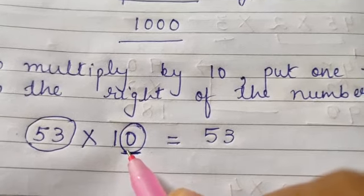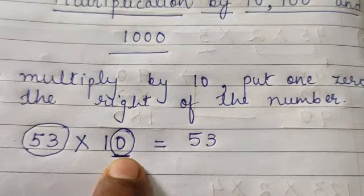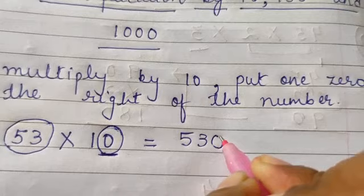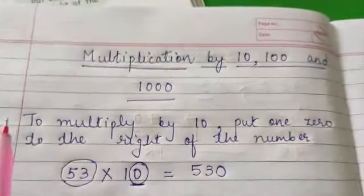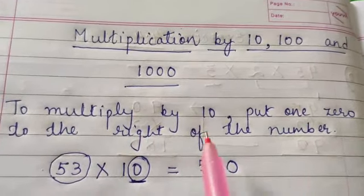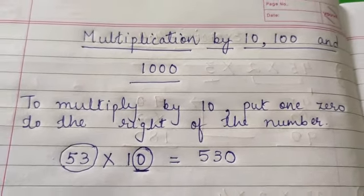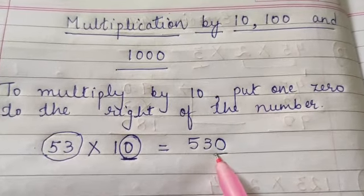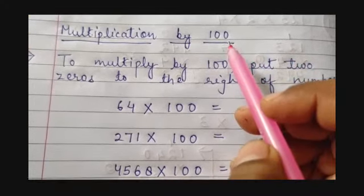53, and the number of zeros in the multiplier — here you can clearly see that there is 1 zero in the multiplier, that is 10 — so we will be writing 1 zero in the product. It is given in your book: to multiply by 10, put 1 zero to the right of the number. That is the shortest method to multiply any number by 10. You just need to put 1 zero to the right of the number.